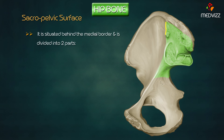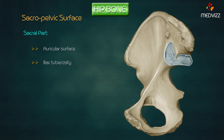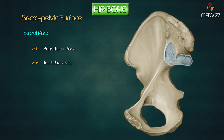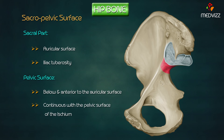The sacropelvic surface is situated behind the medial border and is divided into two parts: sacral and pelvic. The sacral part presents with an auricular surface anteriorly and the iliac tuberosity posteriorly. The auricular surface lies below and anterior to the iliac tuberosity, resembles the shape of a pinna of the ear, and articulates with the auricular surface of the sacrum. The iliac tuberosity is a rough area below the iliac crest. The preauricular sulcus is a groove situated in front of the auricular surface along the lateral margin of the greater sciatic notch.